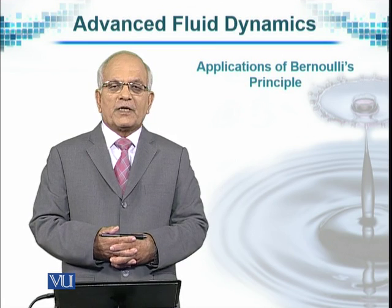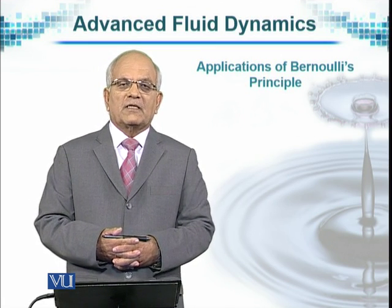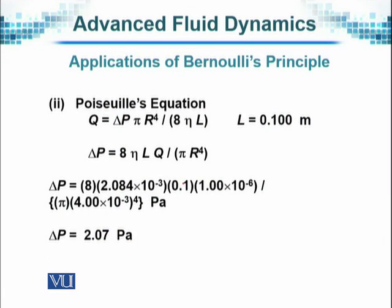From Poiseuille's equation, the volume Q is equal to delta P times pi times r to the power 4 over 8 eta into L. P is pressure, r is the radius, eta is the viscosity that is given to us, and L is a certain length. In this case, the segment of the artery that is required to be under consideration is given as the length L equals 0.1 meter.